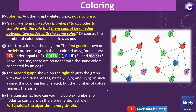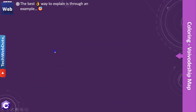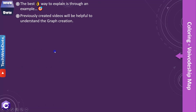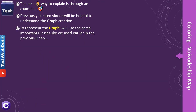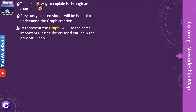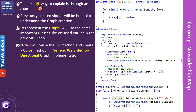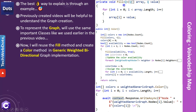The best way to explain is through an example, but let me explain in a bit more detail what we are going to implement and how. Previously created videos will be very helpful to understand graph creation — how we created the graph in the previous series — because I am going to utilize the same approach. To represent the graph we will use the same important classes as used earlier.